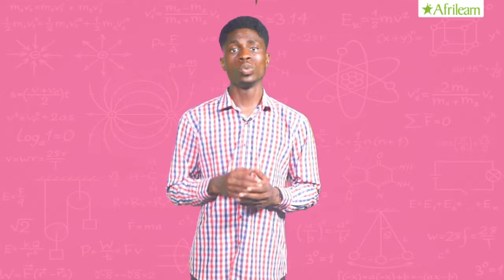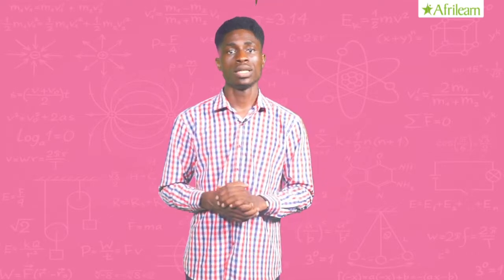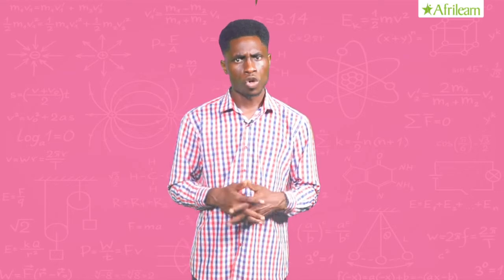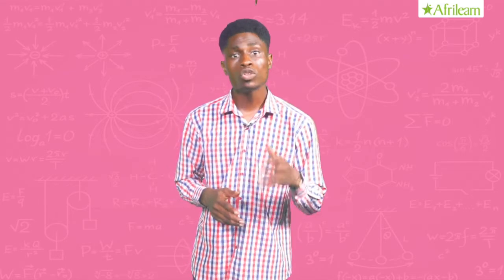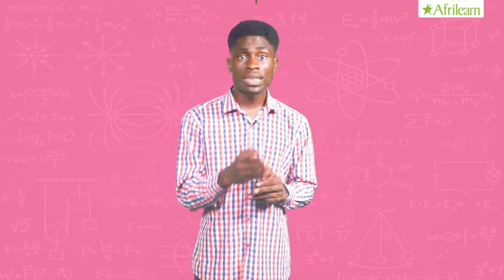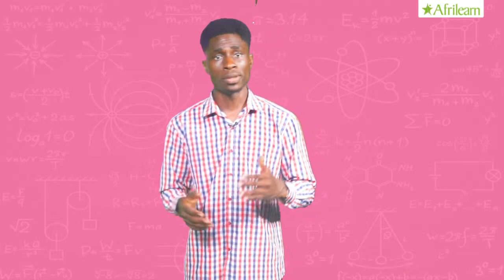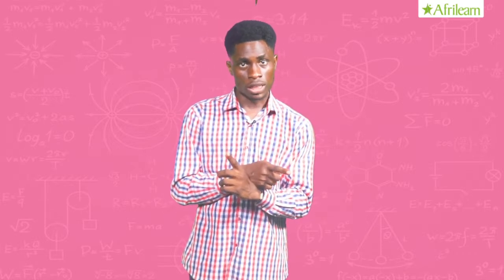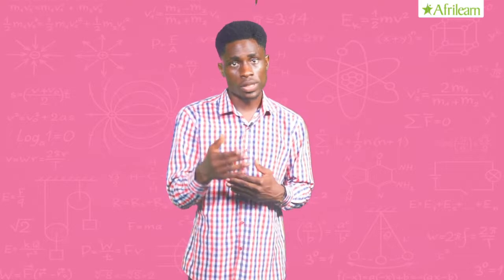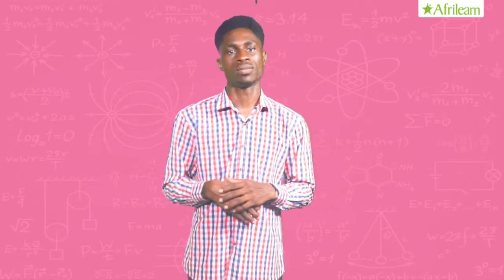Solution: apparent weight equals 3 Newton, upthrust equals 2.6 Newton. According to Archimedes' principle, upthrust equals real weight minus apparent weight. Therefore, 2.6 Newton equals real weight minus 3 Newton. Rearranging, real weight equals 2.6 Newton plus 3 Newton, which gives us 5.6 Newton.